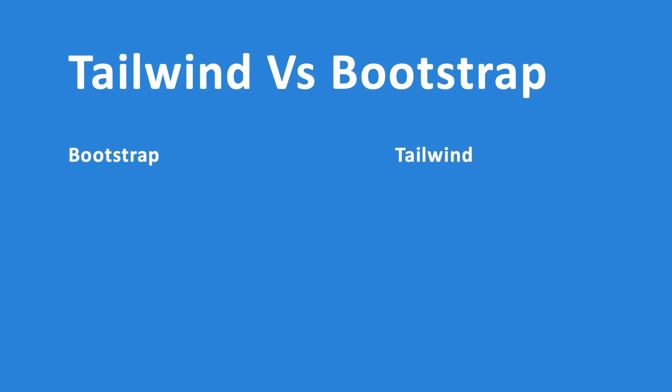To be honest, there is a big difference between Tailwind and Bootstrap. Whenever you write Bootstrap, you're using classes whose names describe how they are going to be used — names such as container, row, col, card. It's a little different in Tailwind, since you're creating a single styling for a specific element.